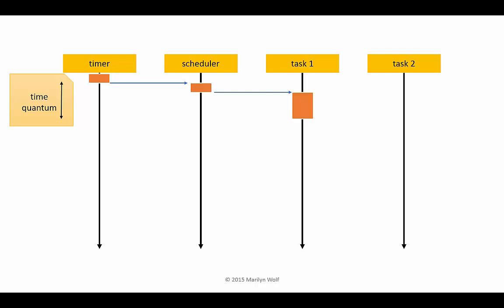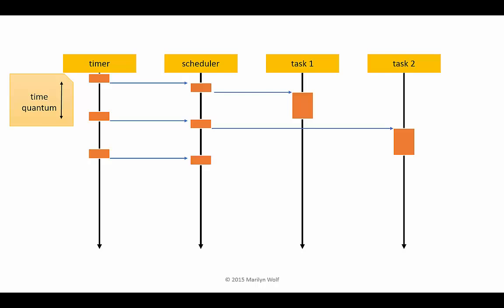The time quantum is the time between timer interrupts. So with the next timer interrupt, the scheduler runs again and decides what task to run now — in this case, task two. At the next time quantum, the scheduler runs again and decides what task to run. It can decide to run the same task as in the last time quantum.